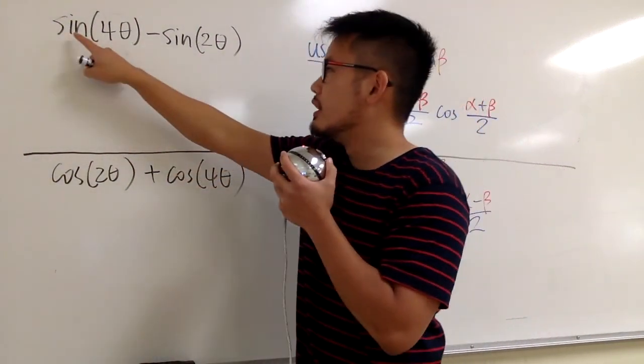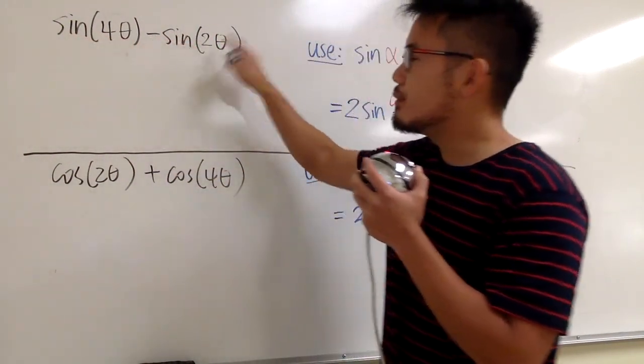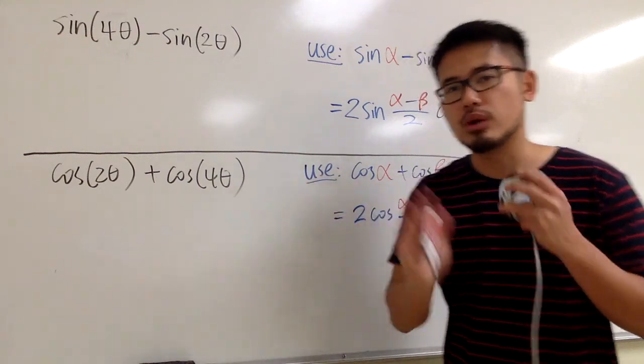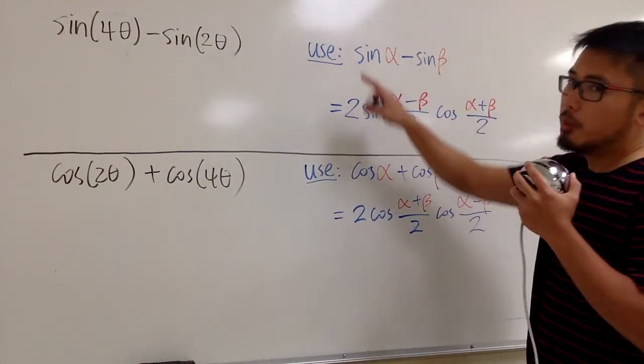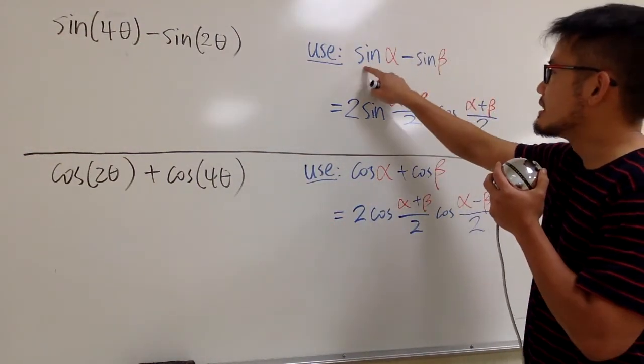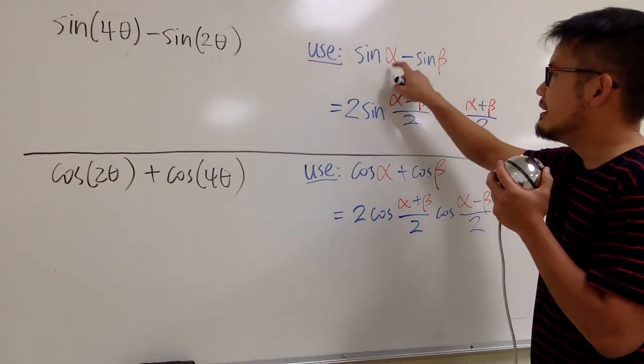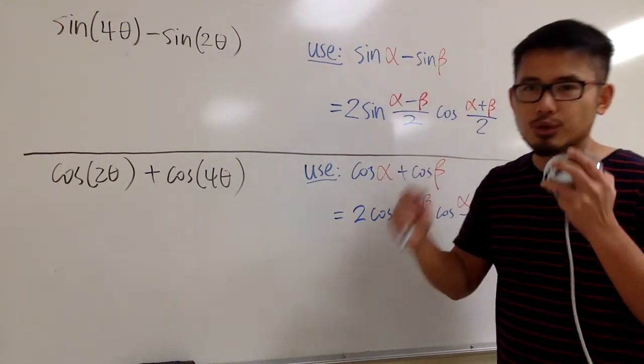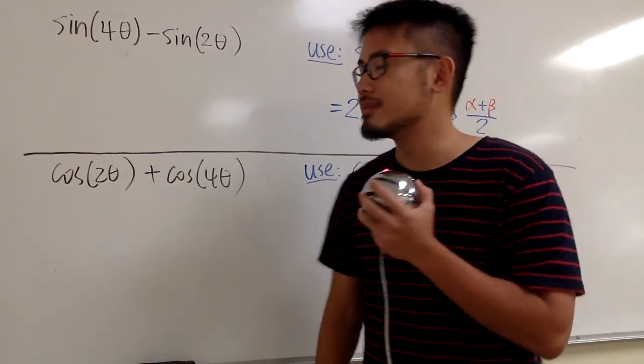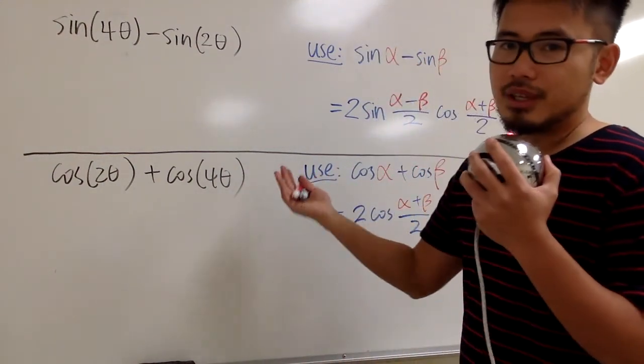We are going to see how we can change sine of 4 theta minus sine of 2 theta into a product of sine or cosine. So this is the formula that we're going to use. We see we have sine minus sine, and the angles are different. Be sure to look for the correct formula in your book. So let's just get to work.